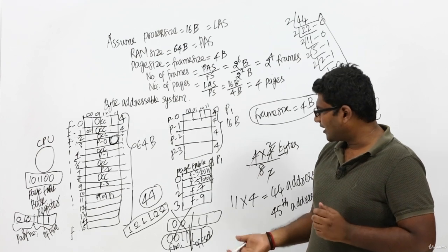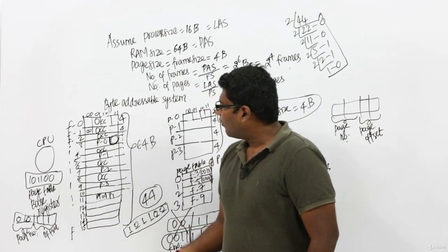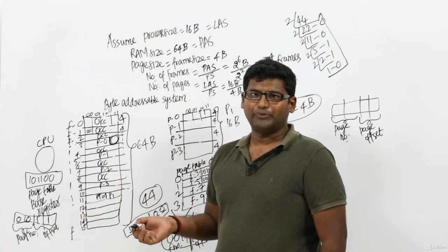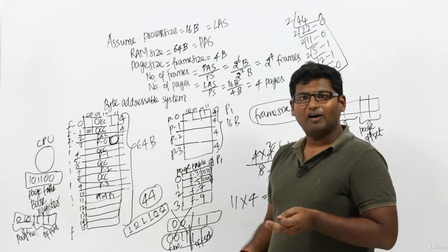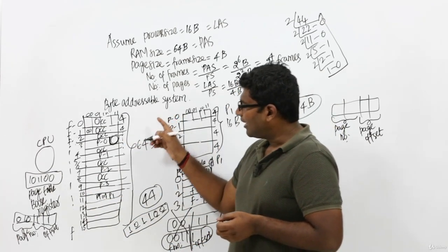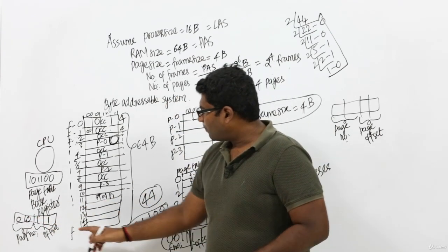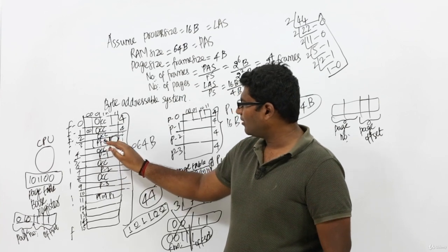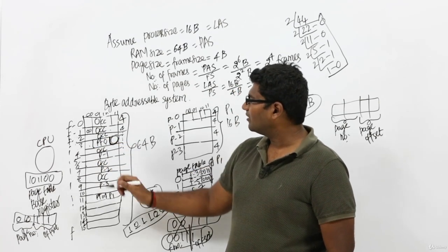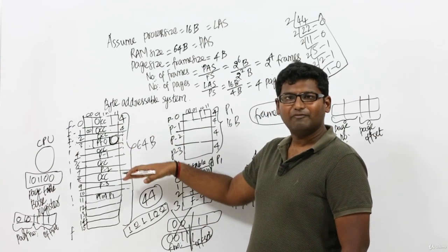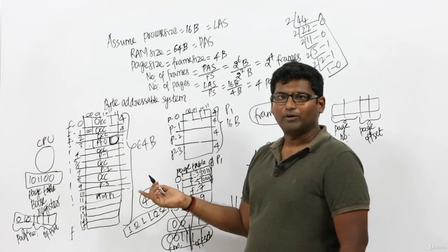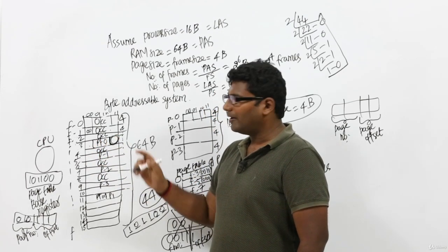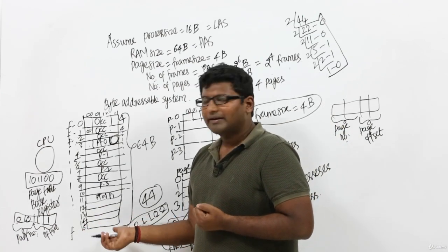We can verify this is the correct address. Our logical address indicates the third byte of process P1 should be executed. In a byte addressable system, 0011 means byte number 3. Byte number 0 of P1 is here, byte number 1 here, byte number 2 here, and byte number 3 is here — the last byte of page 0 of P1, which is in frame 3. So our paging technique works perfectly fine.